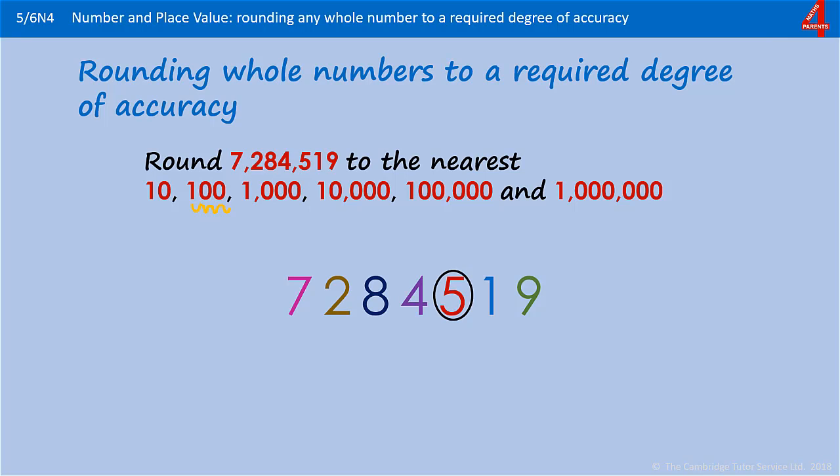Having identified the digit in the hundreds column, we're going to decide does that stay as 500 or does it go up to 600. Look at the tens column, that's just a one, which means this number will be rounded down to the nearest hundred. So when that 19 becomes 00, the 500 will stay the same. 7,284,500.